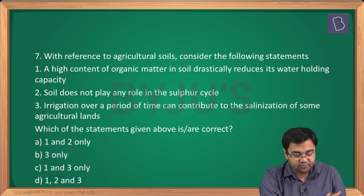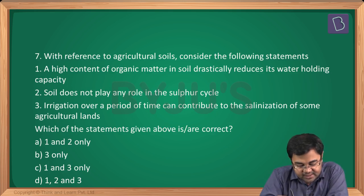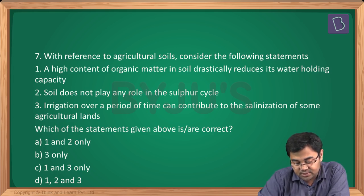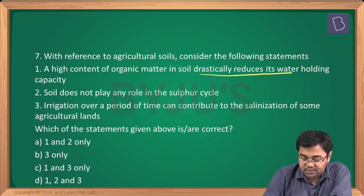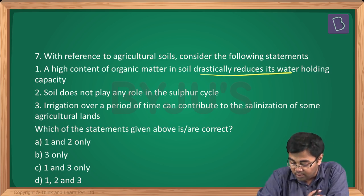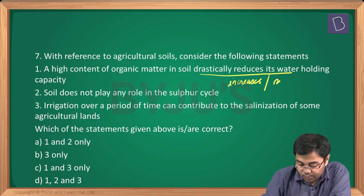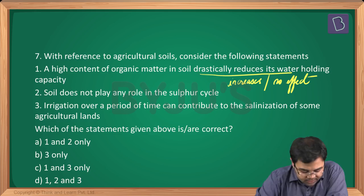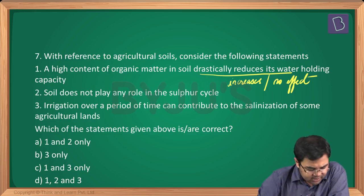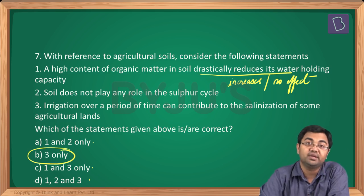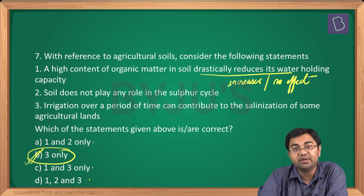Question number 7: with reference to agricultural soils, consider the following statements. Statement 1 says a high content of organic matter in soil drastically reduces its water holding capacity — which is wrong. It actually increases water holding capacity, or sometimes has no effect. Since statement 1 is wrong, and all other options include statement 1, you are left with option B as the correct answer.